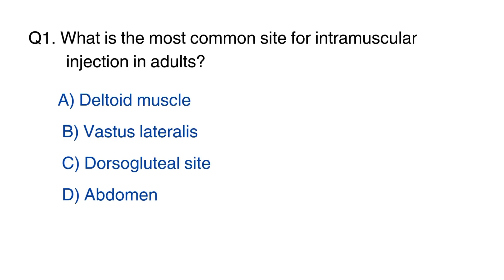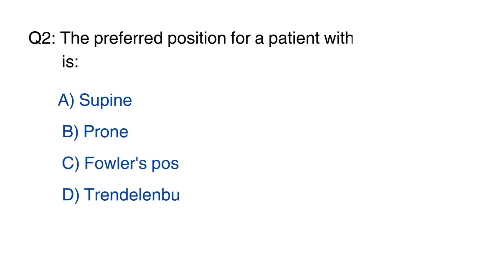Question number 1: What is the most common site for intramuscular injection in adults? The right option is option A, deltoid muscle.